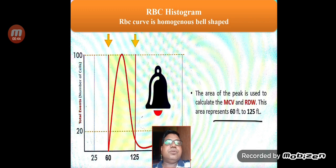Before going to the cases, we should know about the RBC histograms and the WBC histograms, which are important in order to differentiate these two conditions. The RBC histogram is basically a homogeneous curve and it appears as a well-shaped curve. The peak of this curve is used to calculate the MCV and the RDW, and most of the area it represents is between 60 femtolitres to 125 femtolitres.